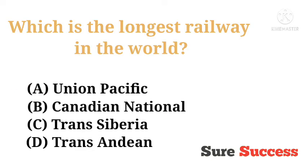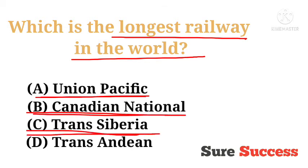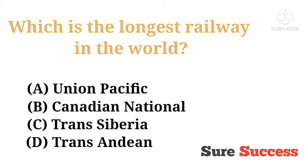Which is the longest railway in the world? Options are Union Pacific, Canadian National, Trans-Siberia, and Trans-Andean. The correct answer is Trans-Siberia — it is the longest railway in the world.